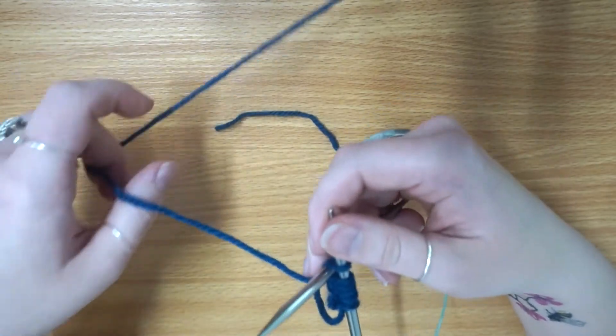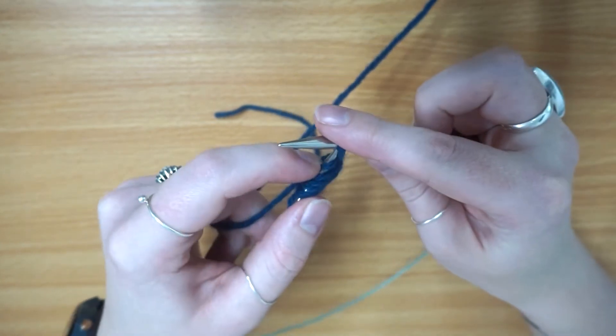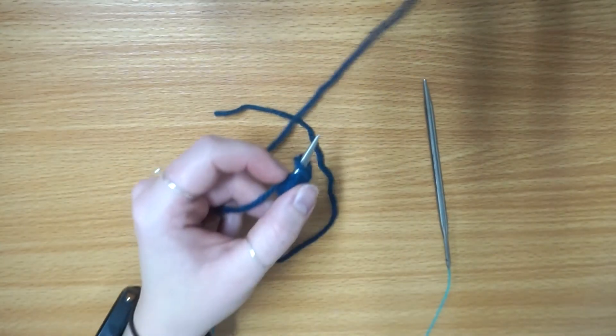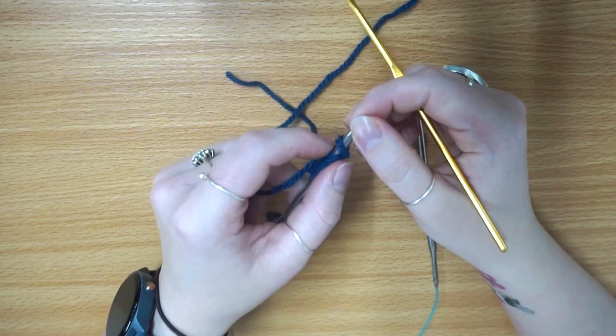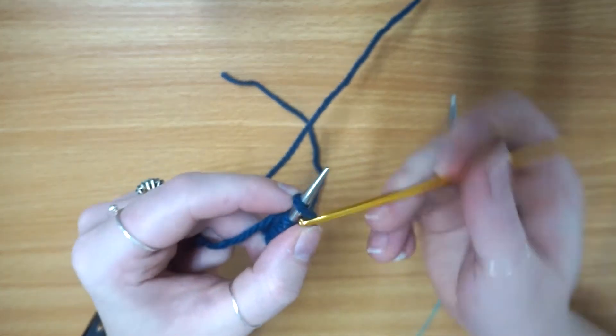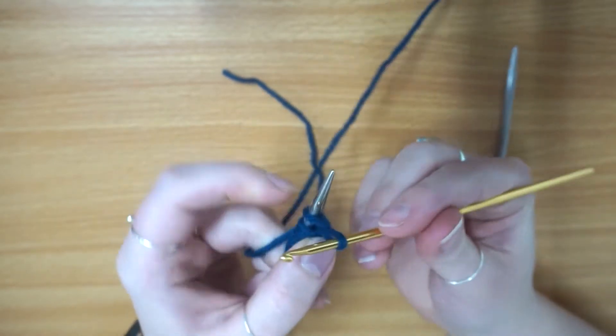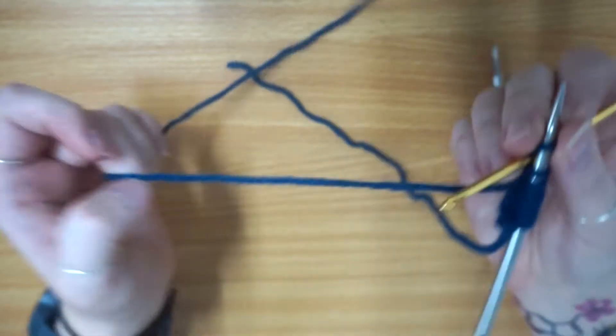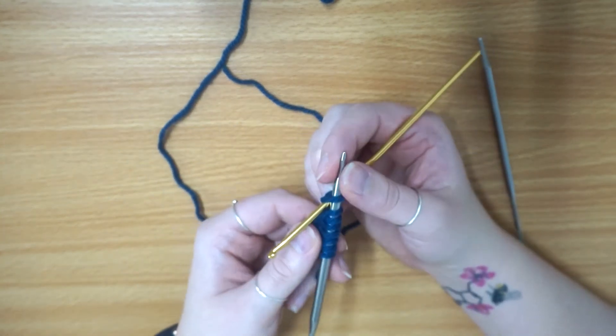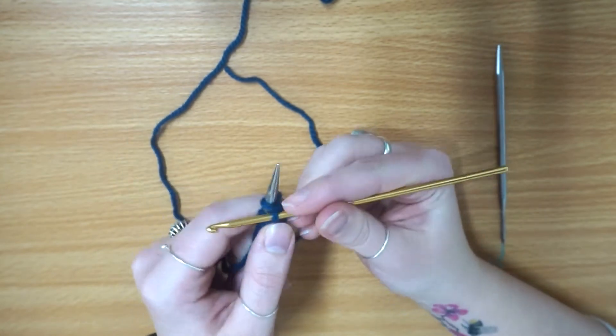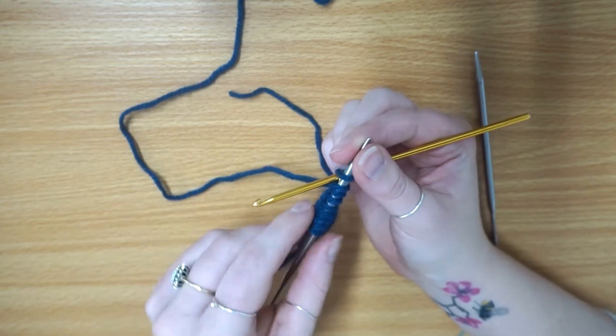You could also do this with a crochet hook. If you're struggling with the needle, what you can do is place your crochet hook like you would with a needle between the two stitches, yarn over your hook, and then just pull it through and onto the needle. That is actually probably easier than using a knitting needle. I think I've just found my very own hack, which I'm sure many people have come up with before, but that is actually so much easier.